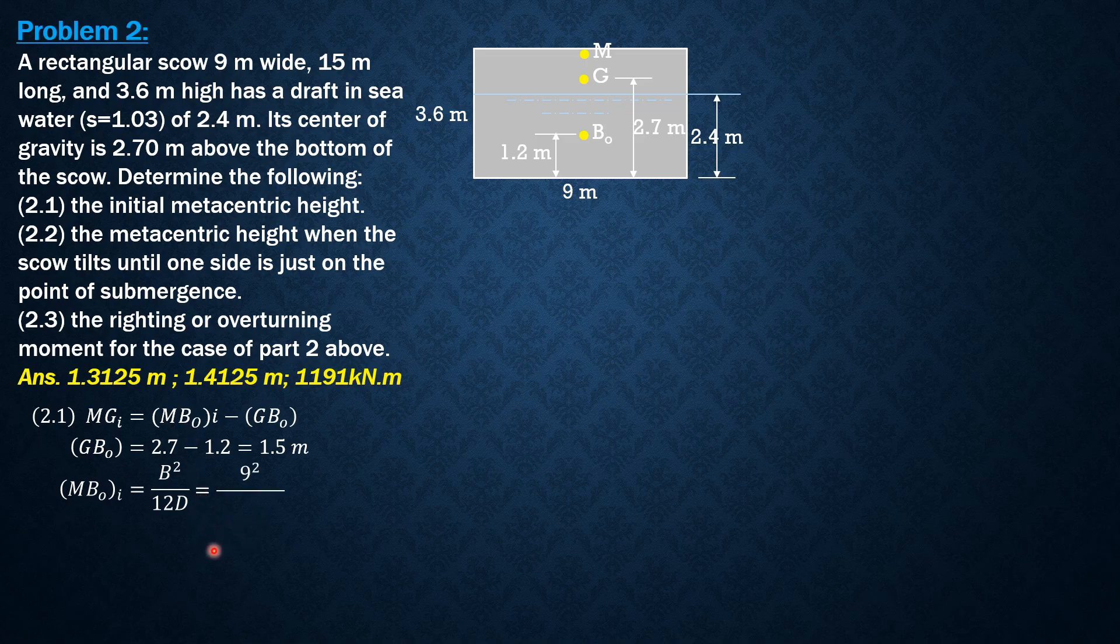Substituting, 9²/(12×2.4), so the initial MB₀ is 2.8125 meters. We can now compute the initial metacentric height: 2.8125 minus 1.5, so the initial metacentric height is 1.3125 meters.